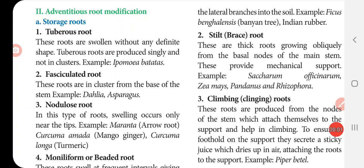Now adventitious root modification. Under adventitious root modification we have three categories: storage, mechanical support, and vital function. First one is storage root — how many types? Five types. The first type is tuberous root. These roots are swollen without any definite shape. Tuberous roots are produced singly and not in clusters. Example: Ipomoea batatas.